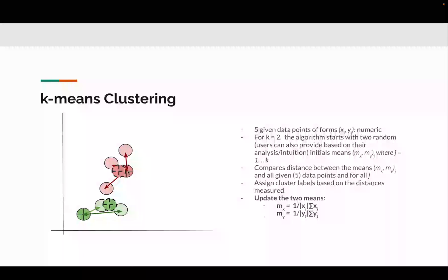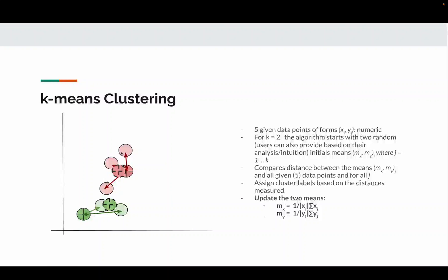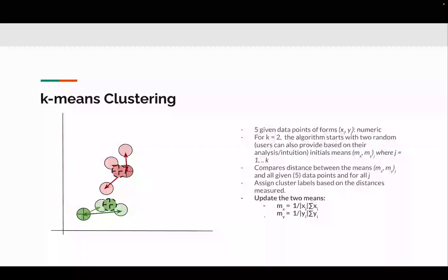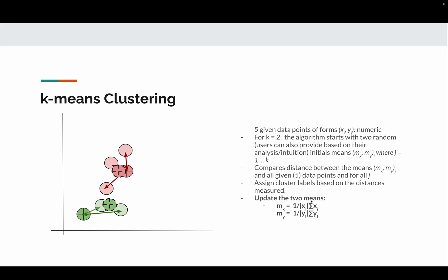Once we determine which points are closer to which seed, we update each mean. This was our initial seed, but because we found that these three data points are closer to it, we use the values of those three points to estimate the new mean. The mean moved from here to here. Likewise, the green seed moved from its original position to a new location.